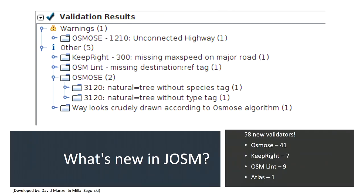So what have we done? We've added 58 new validators to JOSM, all using MapCSS. We didn't want to reinvent the wheel, so if JOSM already had a somewhat similar check to OSMOS or a different validation tool, we didn't add it. We just wanted to help create a more comprehensive collection of validation tools available directly to mappers as they're mapping. 41 of our checks have been inspired by OSMOS, seven from KeepRight, OSM Lint has a few, and even one from Atlas, which mainly looks at highway-related issues and lives in the OSM lab GitHub repo.